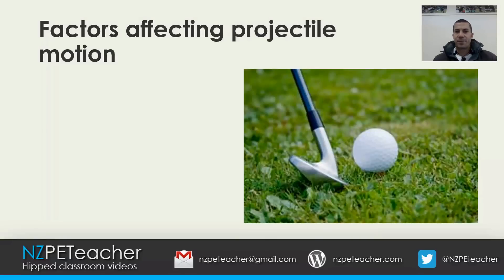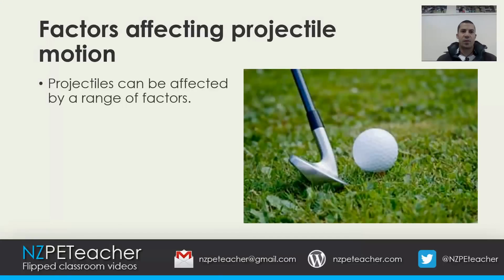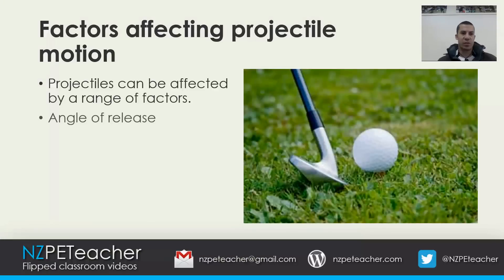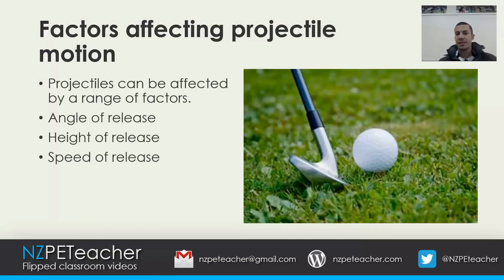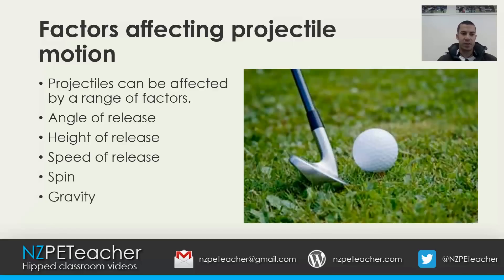As discussed in the last video, the factors that affect projectile motion can be a range of different factors. The ones we have been looking at are angle of release, height of release, and speed of release. Today we are going to focus on spin, gravity, and air resistance.